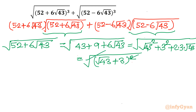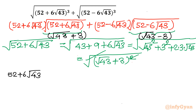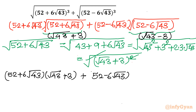So the expression becomes: (52 + 6√43)(√43 + 3) + (52 − 6√43)(√43 − 3). Now let us expand. The first bracket gives 52√43 + 156 + 6·43 + 18√43 = 52√43 + 156 + 258 + 18√43. The second bracket gives 52√43 − 156 + 6·43 − 18√43 = 52√43 − 156 + 258 − 18√43.